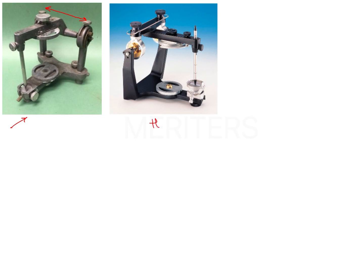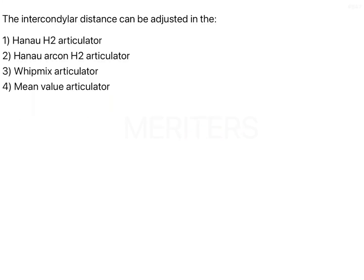The second one is a type of Hanau Archon variety known as the Hanau Wide View 2. It is very commonly used in the Indian curriculum, so remember this image well. Here also the intercondylar distance is not adjustable, but the lateral and horizontal condylar guidance can be adjusted, the incisal guidance can be adjusted, and vertically you can also adjust the height of the bite. So the first two do not have an adjustable intercondylar distance, and Mean Value also has a fixed intercondylar distance.